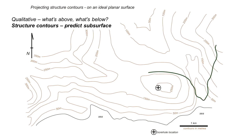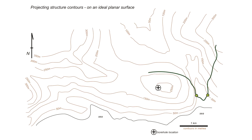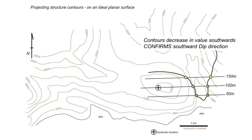Now let's add structure contours and predict the subsurface more carefully. At two locations, the geological boundary crosses the 50 metre topographic contour — those are two points on the boundary at 50 metres elevation. Joining these up gives us the 50 metre structure contour. Doing the same with the 100 metre topographic contour intercepts gives the 100 metre structure contour. Two places on the boundary at 150 metres elevation give us the 150 metre structure contour.